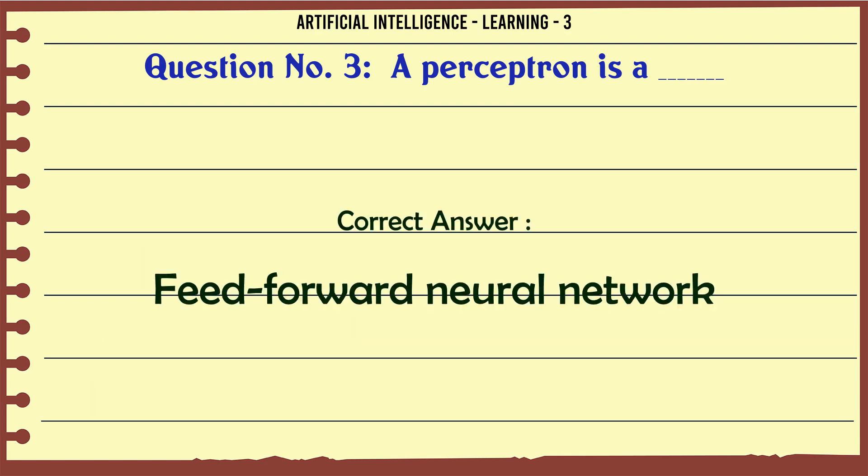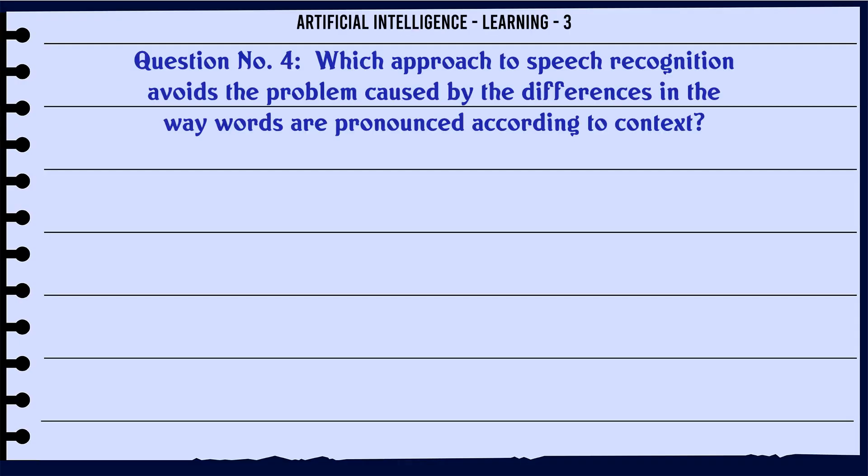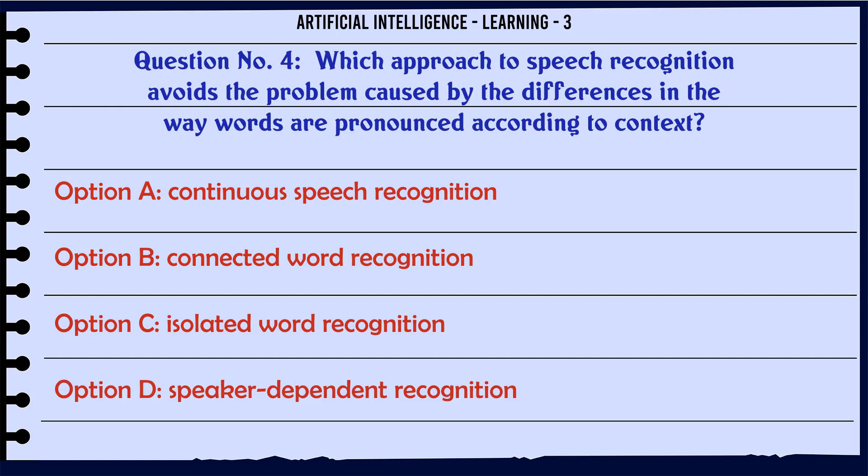Which approach to speech recognition avoids the problem caused by the differences in the way words are pronounced according to context? Option A: continuous speech recognition. Option B: connected word recognition. Option C: isolated word recognition. Option D: speaker dependent recognition.